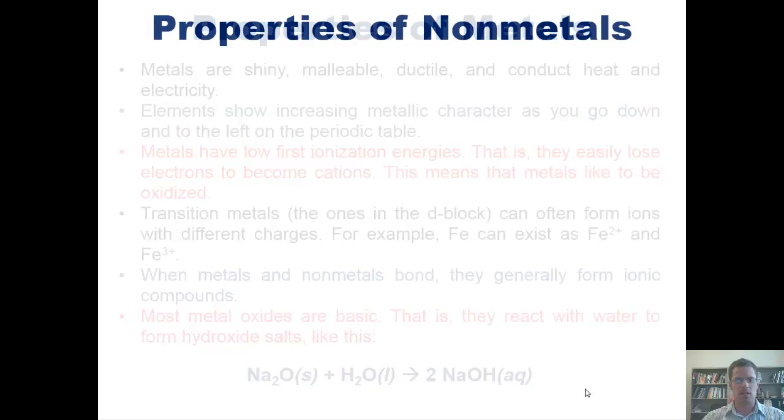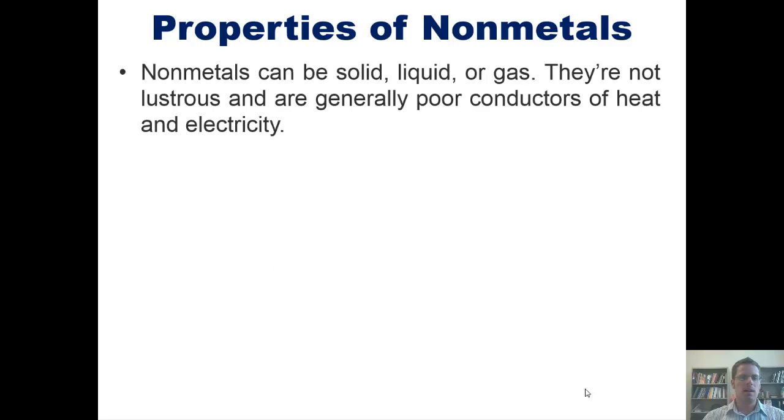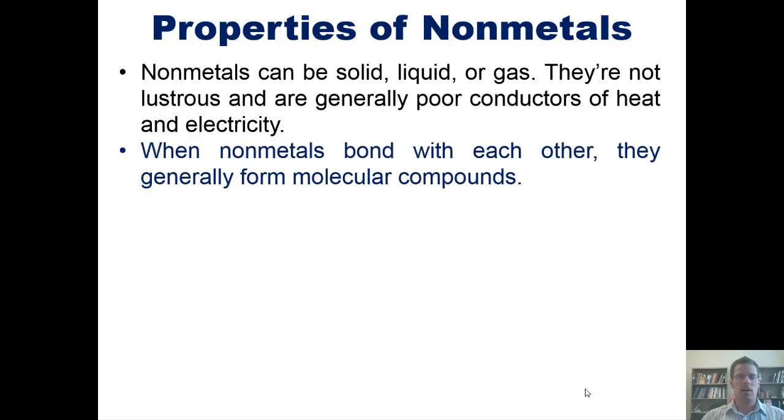Now we'll talk about the properties of nonmetals. Nonmetals can be solid, liquid, or gas. They're not lustrous, that is, they're not shiny, and are generally poor conductors of heat and electricity. When nonmetals bond with each other, they generally form molecular compounds, as opposed to ionic compounds that are formed when nonmetals bond with metals.